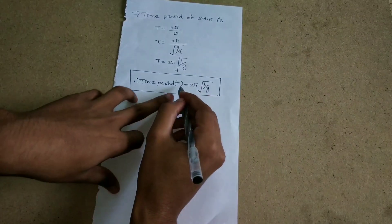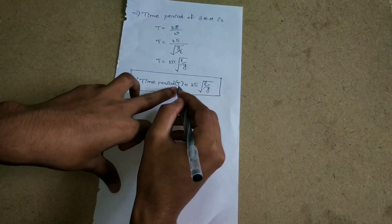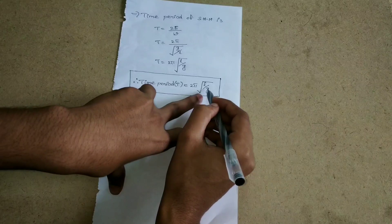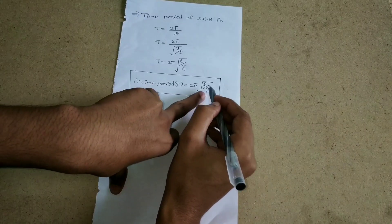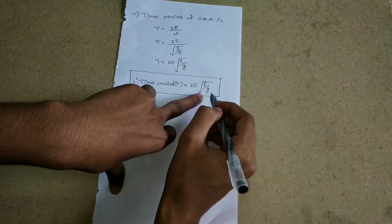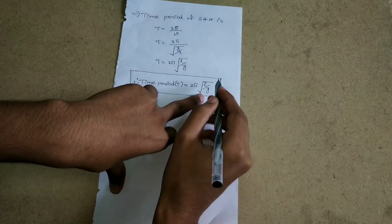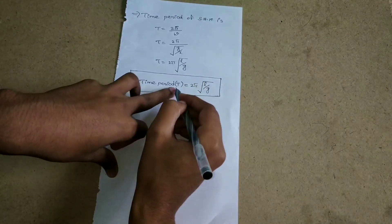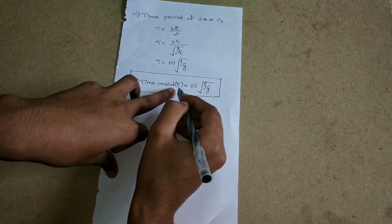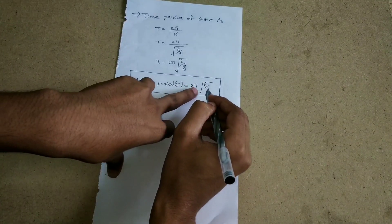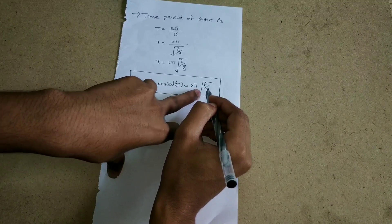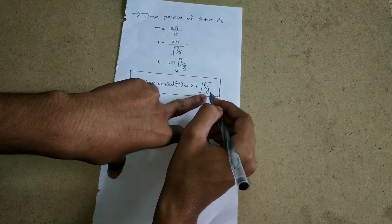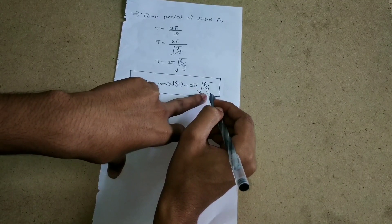Here, L is the length of the pendulum and g is the acceleration due to gravity. The unit of time period T is seconds, the unit of length L is meters, and g is in meters per second squared.